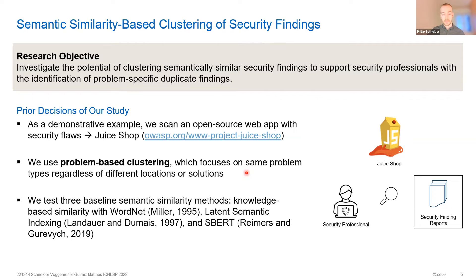Once we had this, we decided to use three baseline models of semantic similarity to test if it's even feasible to use semantic similarity for this highly domain-specific natural language text. We had three different categories: a knowledge-based semantic similarity using the WordNet graph, a classic model of latent semantic indexing (LSI), and for transformer-based models, we used SBERT, which is also quite common as a baseline.